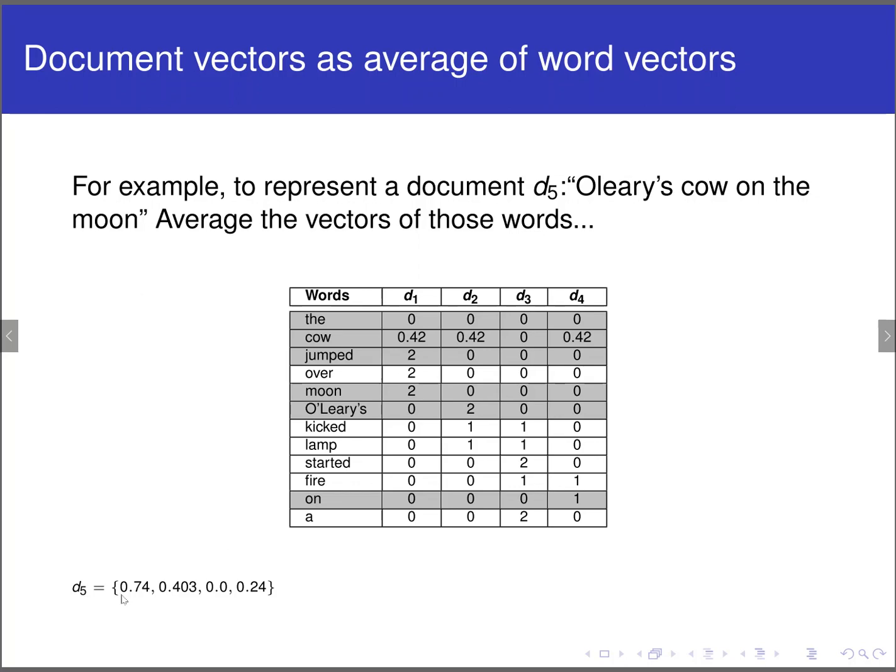And if I average these things, document 5, I get an average of 0.74, 0.403, 0, and 0.24 for each one of the different documents. So I can get a vector of the word of document 5. Although I've never seen document 5, I can still generate a vector for it. So this would be the idea that the average of the words of the document define a vector for the document. And that's pretty good. And it works very well in practice when you want to do document similarity.